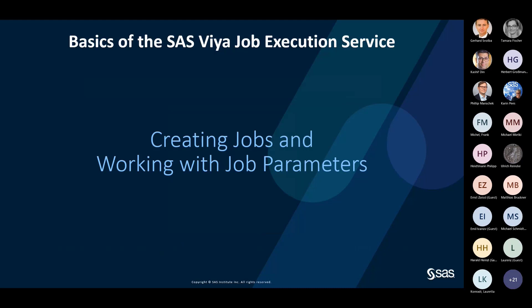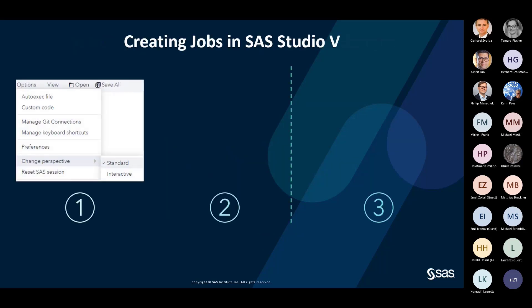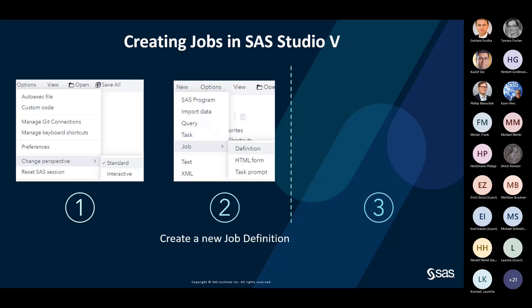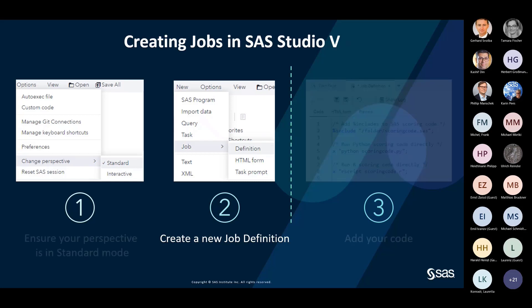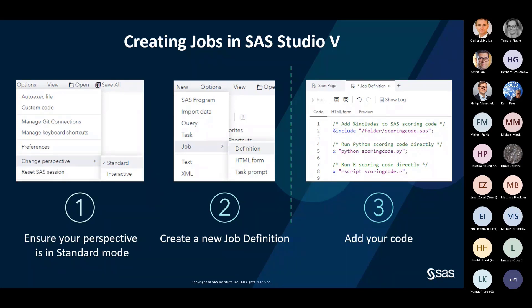Now, some basics on how to create jobs and work with job parameters. First, you need to go to SAS Studio version 5 or higher. The first step is to change the perspective to Standard mode — if you are not in Standard mode you will not be able to edit and work with jobs. To create a new job, go to New, then Job, then Definition. This opens the code editor where you can include existing scoring code using the include function, or use 'x' to call Python or R scoring code.